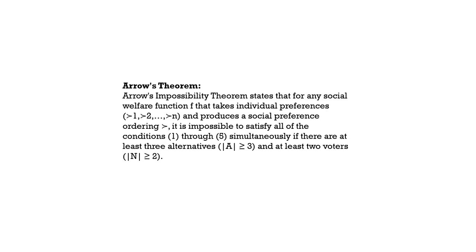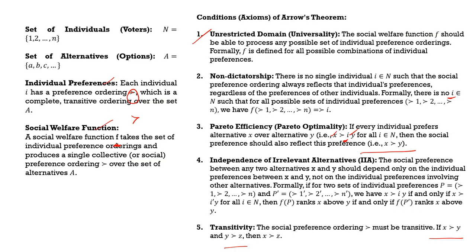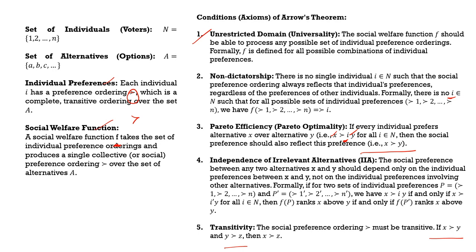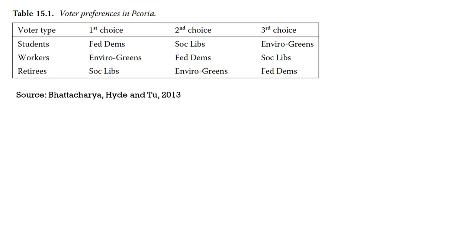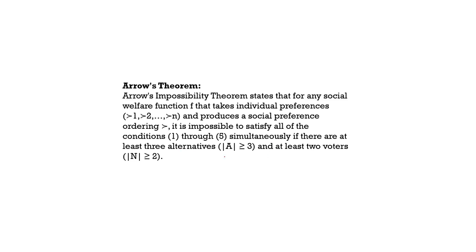Arrow's Impossibility Theorem tells us that for any social welfare function F that takes individual preferences and produces a social preference ordering, it is impossible to satisfy all axioms 1 through 5 if there are at least three alternatives and at least two voters. So if there are at least three policies and at least two groups of voters, it is impossible to find an optimal solution satisfying all these axioms simultaneously.